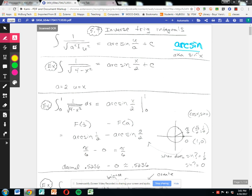The general form of the integral of 1 over radical a squared minus u squared is arc sine u over a plus some constant c. In this particular case, if it's 1 over radical 4 minus x squared, then a equals 2, u is just x. Therefore, arc sine x over 2 plus some constant c.